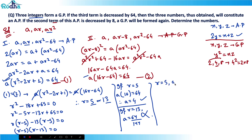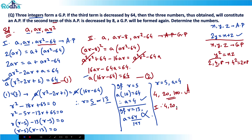Therefore r = 5 and a = 4. The three numbers are a = 4, ar = 20, ar² = 100. Cross-checking condition one: 4, 20, 100 − 64 = 36 → sequence 4, 20, 36 is an AP with common difference 16. Cross-checking condition two: 4, 20 − 8 = 12, 36 → sequence 4, 12, 36 is a GP with common ratio 3. Both conditions satisfied.